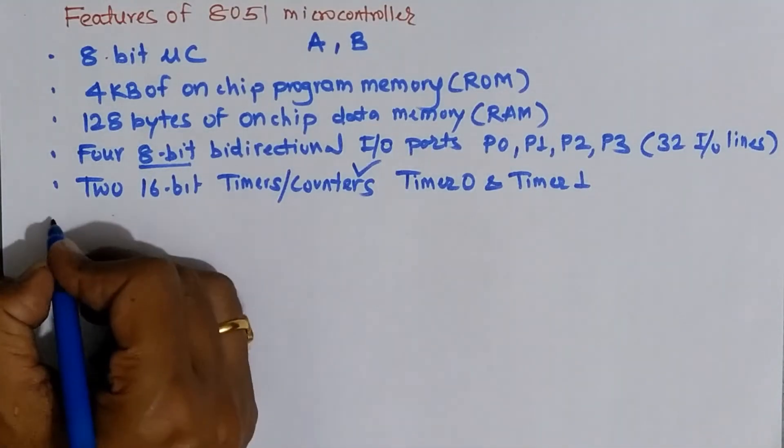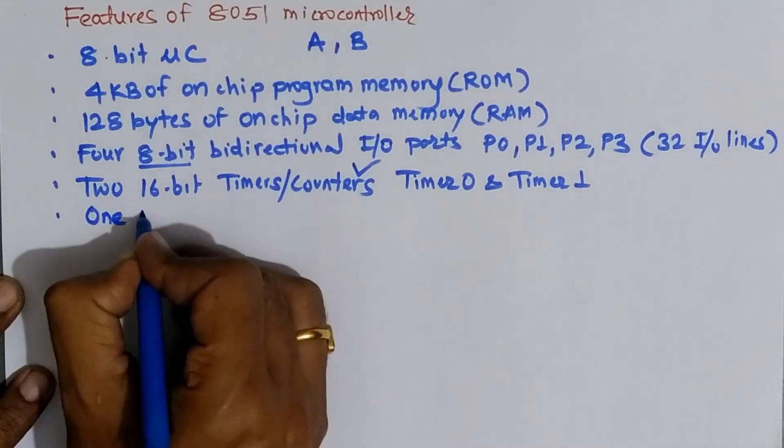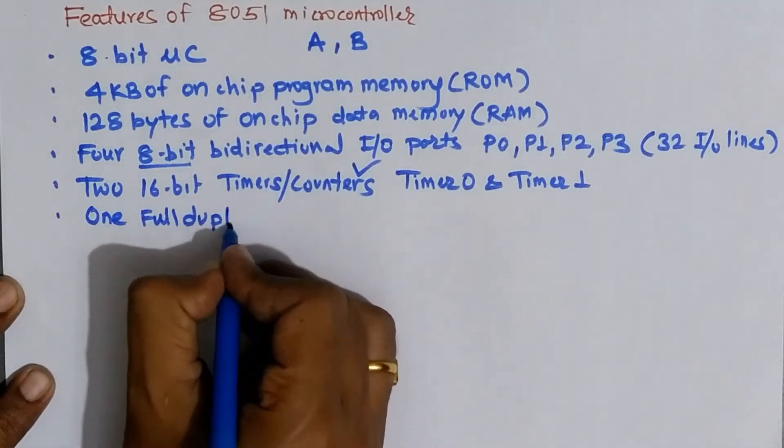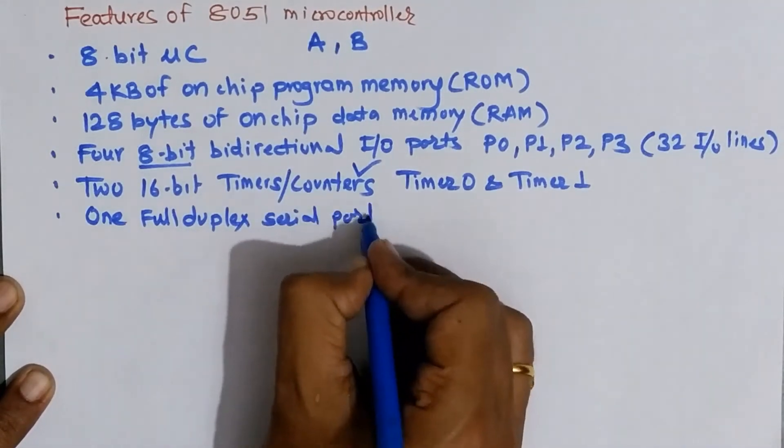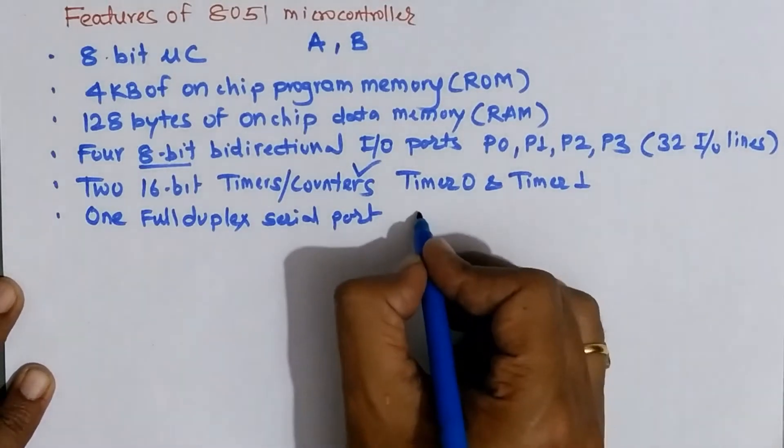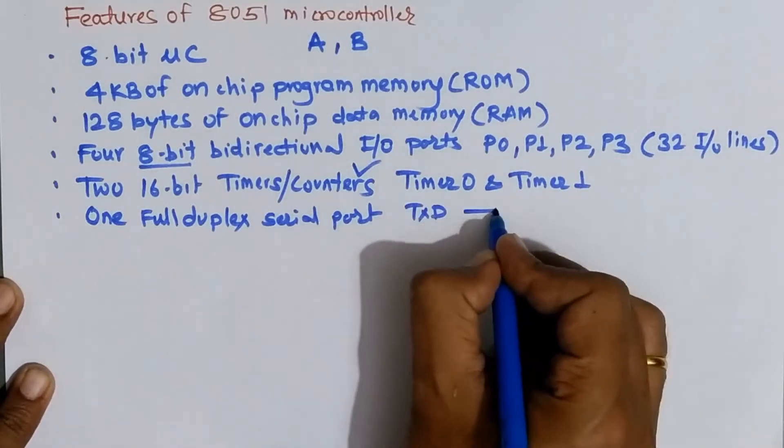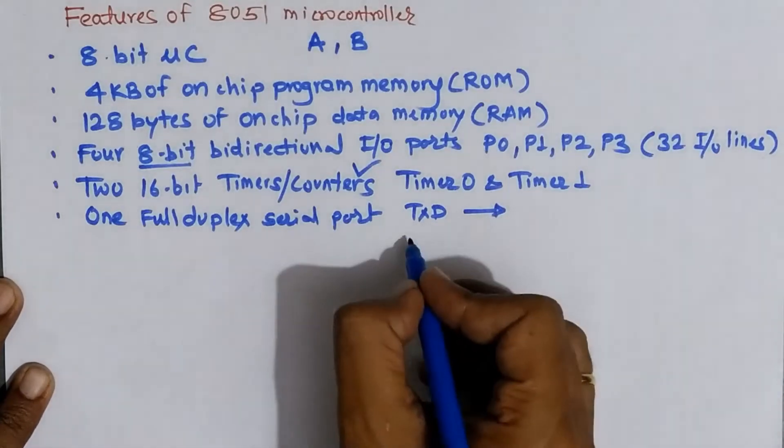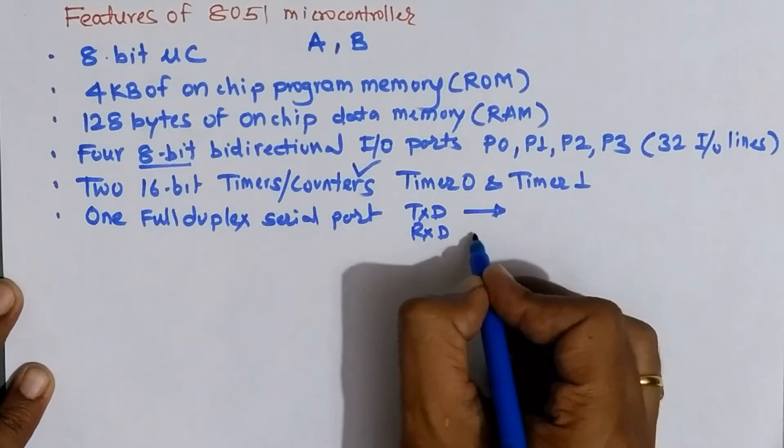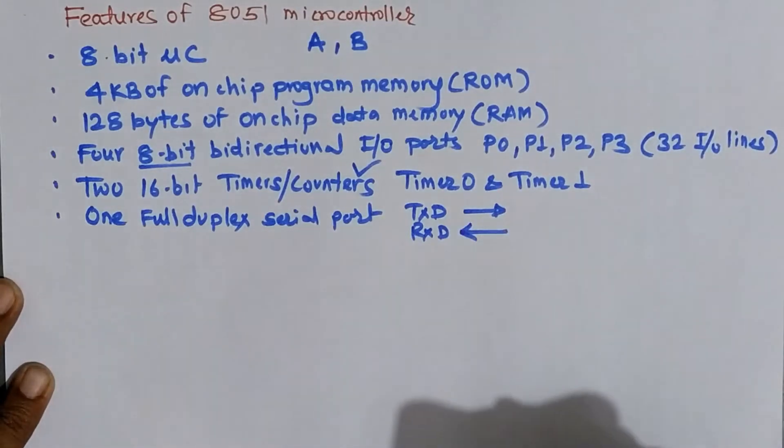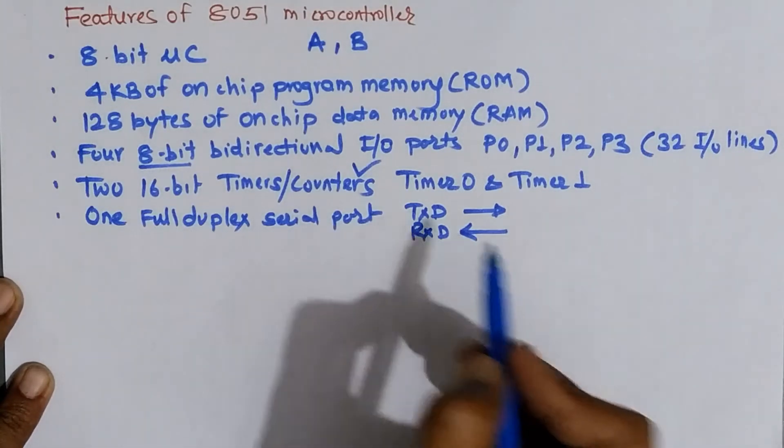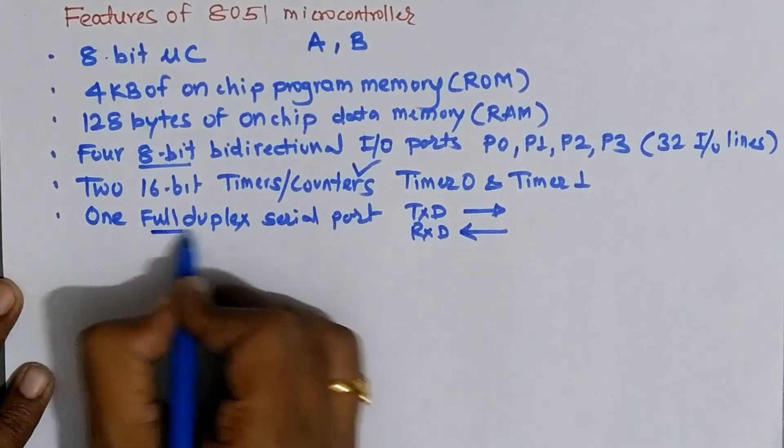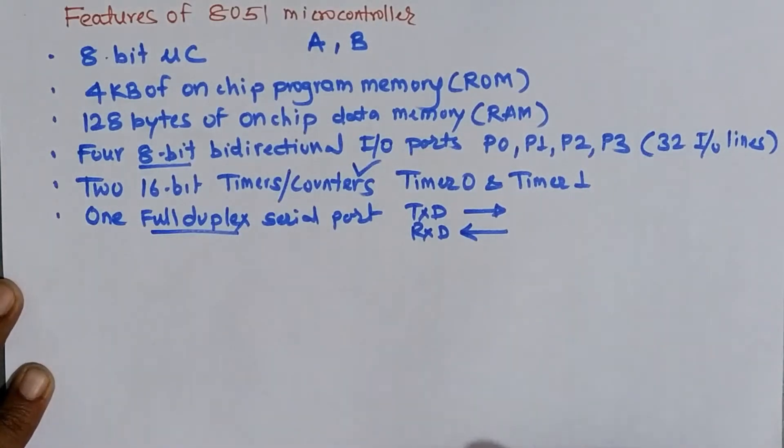The next feature is that 8051 has one full duplex serial port. So it has two dedicated pins. One is TXD through which data can be transmitted serially while second pin is RXD through which data can be received serially from external networks. So transmission and reception purpose has two dedicated pins that's why I have used the term full duplex means serially data can be transmitted at the same time data can be received serially.